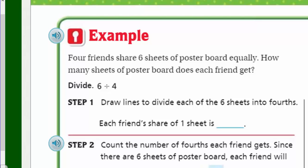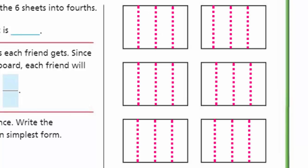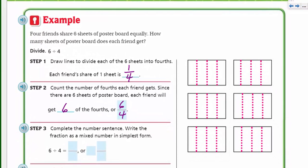Now, it says to draw lines. Step one says to draw lines to divide each of the six sheets into fourths. Well, I think the easiest way to do four is coming right down the middle. So, there we go. I've divided my six sheets into fourths. Each friend's share of one sheet is going to be one fourth. Step two says count the number of fourths each friend gets. Since there are six sheets of poster board, each friend will get six of the fourths, or we could say that that's six fourths.